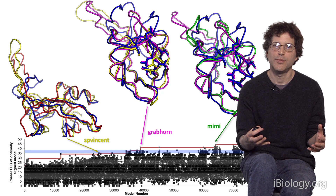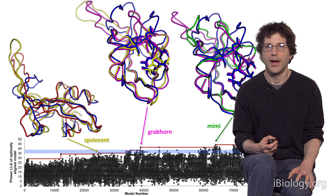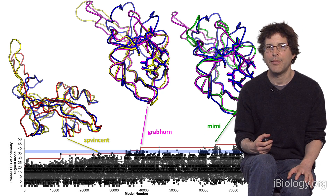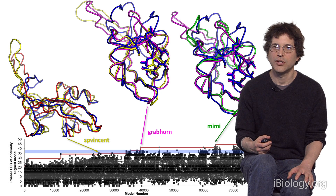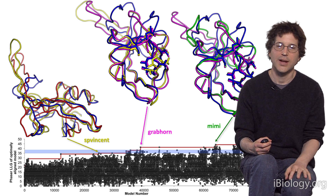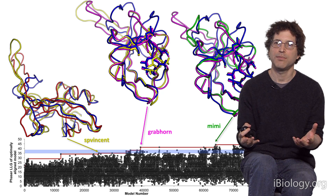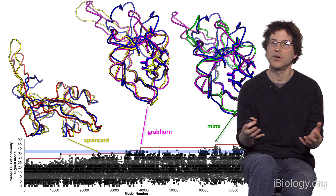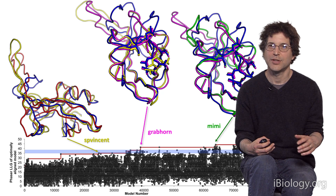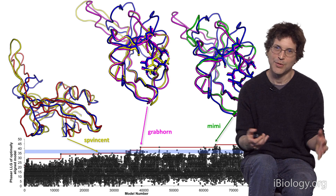S.P. Vinson took the red model, got the yellow model which was closer, then handed it off to his teammate Grabhorn, who produced the magenta structure. Grabhorn passed it off to Mimi, who ran the final lap of the relay. Mimi's green structure is much closer to the actual structure in blue than the starting red structure. When we got Mimi's structure back, we could see immediately it had to be the correct answer because it fit the experimental data beautifully. The data were like a fingerprint — not enough to tell you what the structure looks like, but enough to confirm it's right.